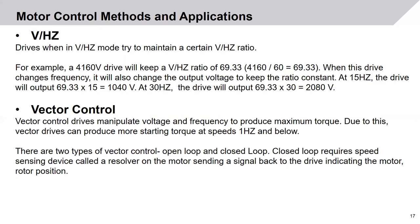Vector control is somewhat different. Vector control drives manipulate voltage and frequency to produce maximum torque. Due to this, vector drives can produce more starting torque at lower speeds — below one hertz. There are two types of vector control: open loop and closed loop. Closed loop requires a speed sensing device called a resolver or tach feedback on the motor, sending a signal back to the drive indicating motor rotor position. In open loop control, there is no resolver or tach feedback — the drive algorithm simply manipulates the operation.